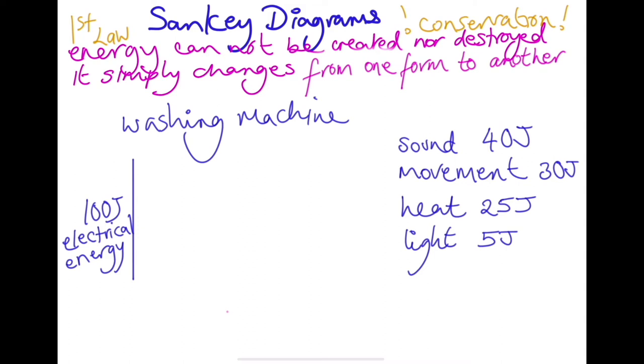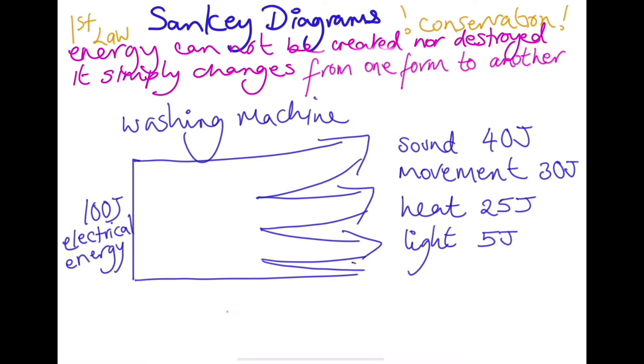What you now have is this 100 joules needs to split down into these proportions. You've got 40 joules, 30 joules, 25 joules, and your 5 joules. And what you have is each bit actually takes its chunk of the 100 and there are no gaps. There is no energy that's not allocated or has not arrived at the other end.